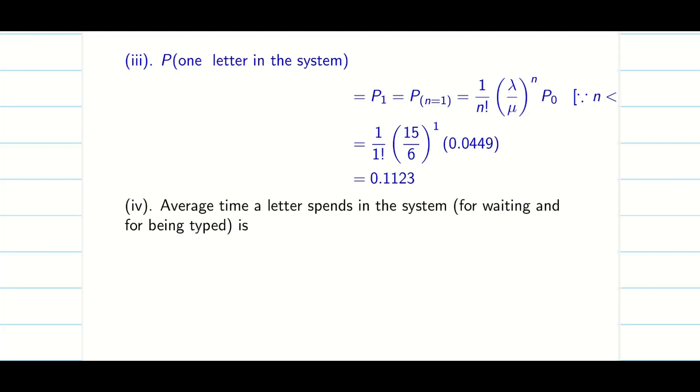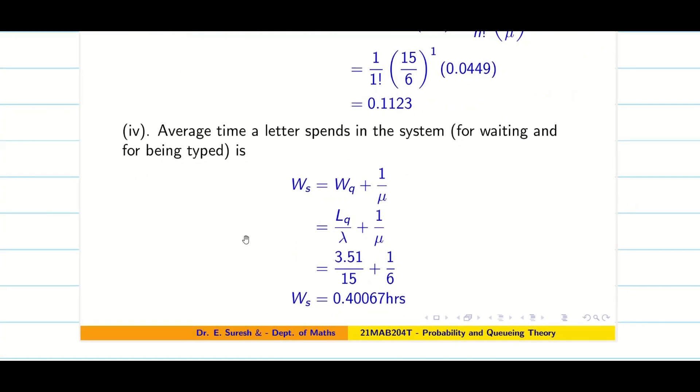The next question is average time a letter spends in the system, that means Ws. Waiting time in the system is going to be simply Wq plus 1 by mu. Now when we substitute this, you will be getting the answer immediately. So Ws, waiting time in the system, is 0.40067. Since we know Wq equals Lq by lambda, we already found Lq. That's why we use this formula here to simplify the answer quickly.